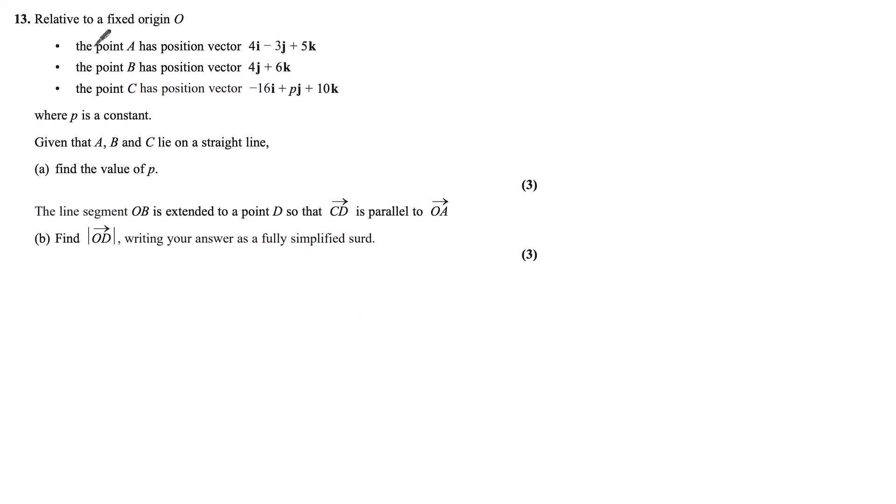Question 13. Relative to a fixed origin O, the point A has position vector 4i minus 3j plus 5k, the point B has position vector 4j plus 6k, and the point C has position vector minus 16i plus pj plus 10k, where p is a constant. Given that A, B, C lie on a straight line, find the value of p.